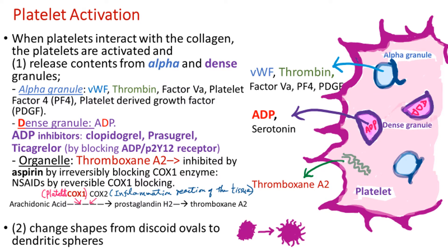Now, platelet activation. When platelets encounter damaged endothelium and interact with collagen, they are activated. They then release contents from the alpha and dense granules, as well as from the organelles of the platelet, and change shape from discoid ovals to dendritic spheres.